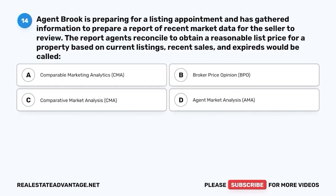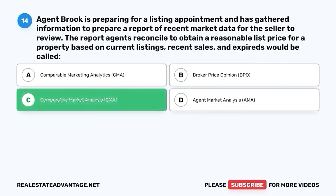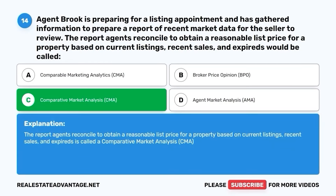Question 14. Agent Brooke is preparing for a listing appointment and has gathered information to prepare a report of recent market data for the seller to review. The report agents reconcile to obtain a reasonable list price for a property based on current listings, recent sales, and expireds would be called: A. Comparable Marketing Analytics CMA. B. Broker Price Opinion BPO. C. Comparative Market Analysis CMA. D. Agent Market Analysis AMA. The correct answer is C. Comparative Market Analysis CMA. The report agents reconcile to obtain a reasonable list price based on current listings, recent sales, and expireds is called a Comparative Market Analysis CMA.